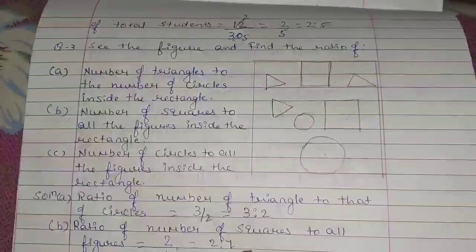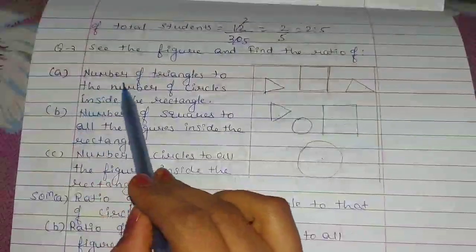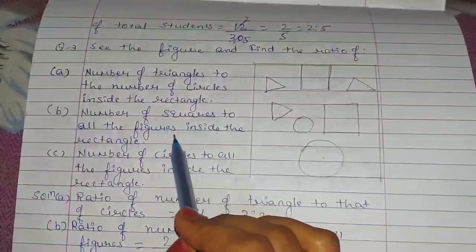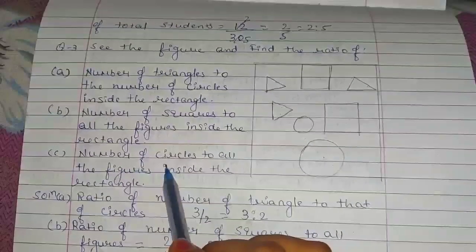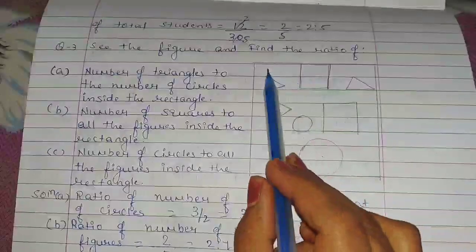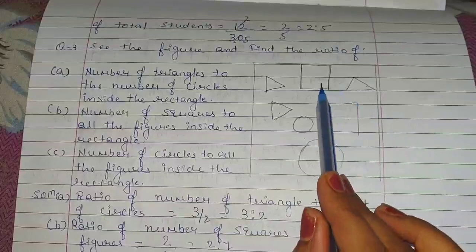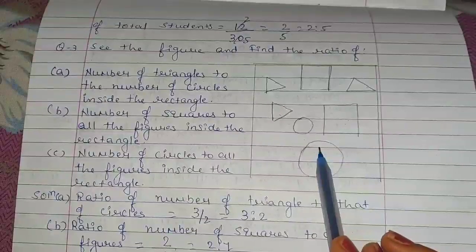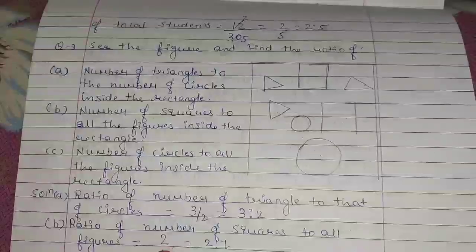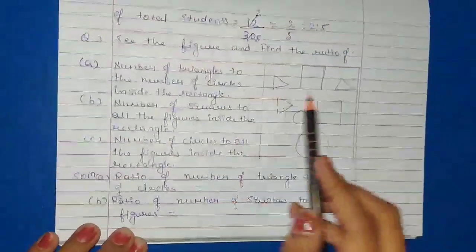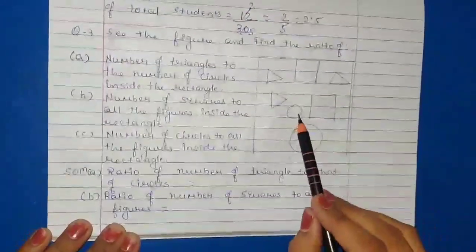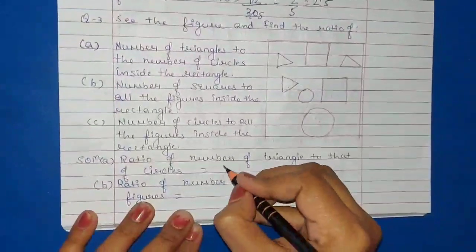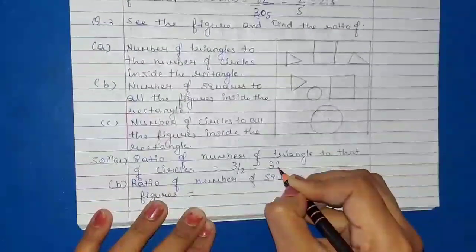Question number 3. See the figure and find the ratio of: Part A — number of triangles to the number of circles inside the rectangle; Part B — number of squares to all figures inside the rectangle; Part C — number of circles to all figures inside the rectangle. In this box, there are three different shapes: squares, triangles, and circles. There are two squares, three triangles, and two circles. For Part A, the ratio of triangles to circles is 3 upon 2, which equals 3 ratio 2.